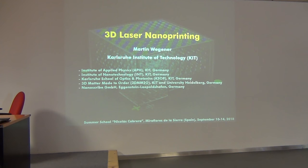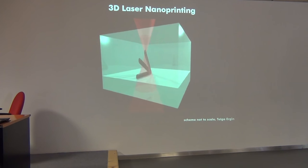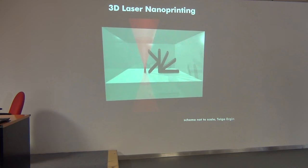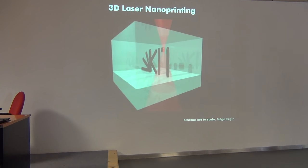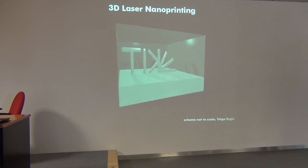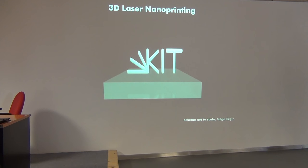I'll give an overview and introduction to the state of the art and challenges. The basic principle: we take very tightly focused femtosecond laser pulses, and by means of two-photon absorption or some other super-linear process, we concentrate energy in a tiny volume element called the voxel — in analogy to the pixel. In this voxel, a chemical reaction takes place: the transition from a liquid monomer to a solid polymer. We scan the focus by computer control, then use a developer like acetone to wash out the remaining liquid monomer, leaving a structure on a substrate.